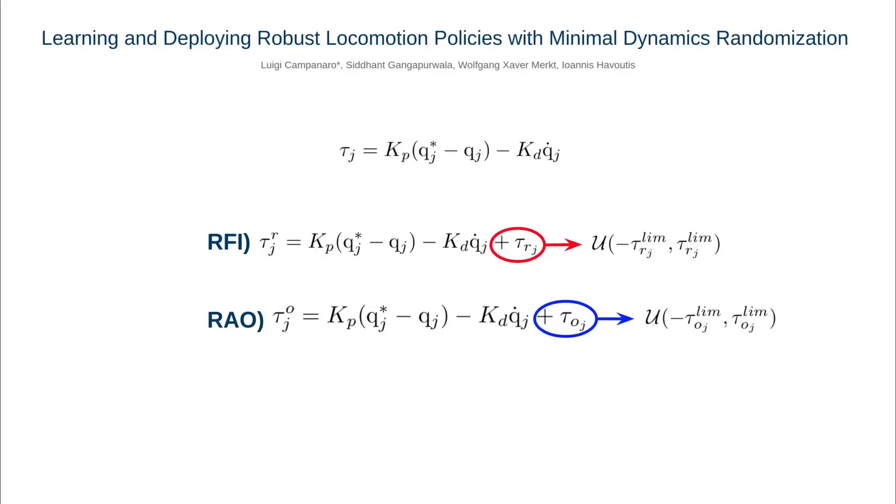However, in this case it is sampled from a uniform distribution only at the beginning of each episode and is kept constant until the following reset of the environment.